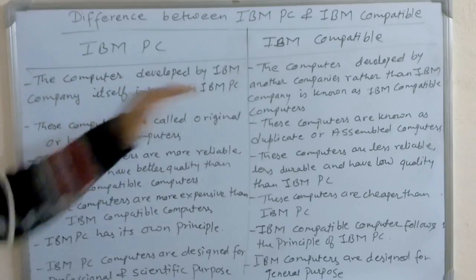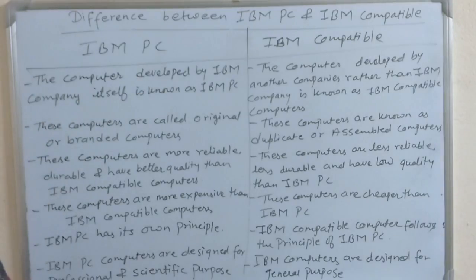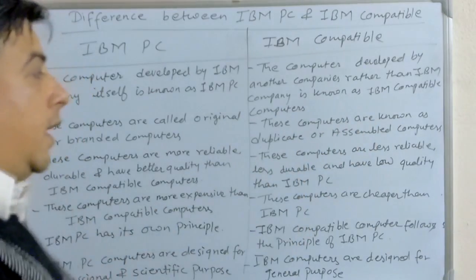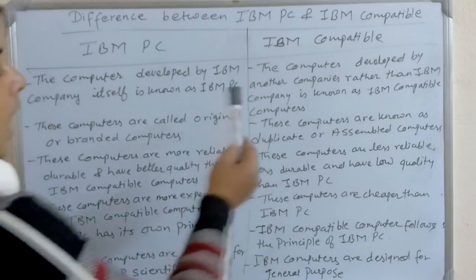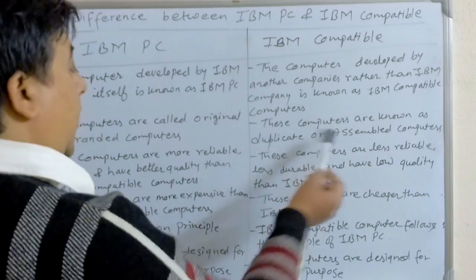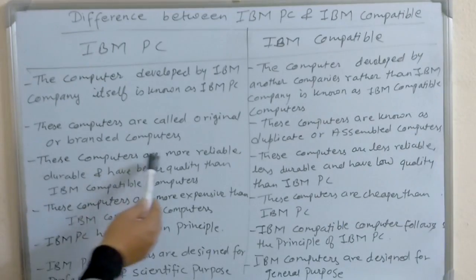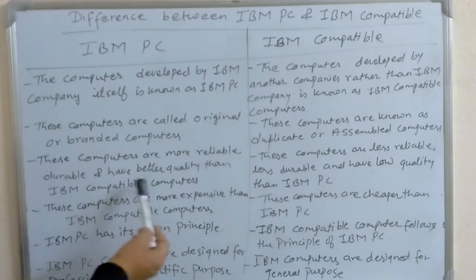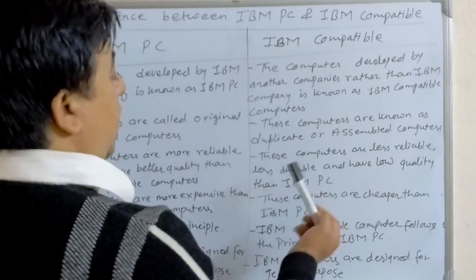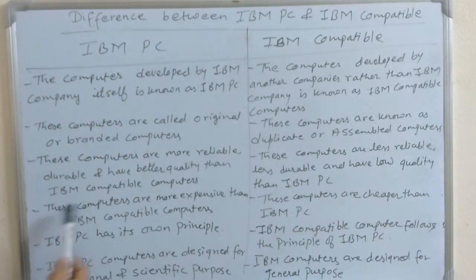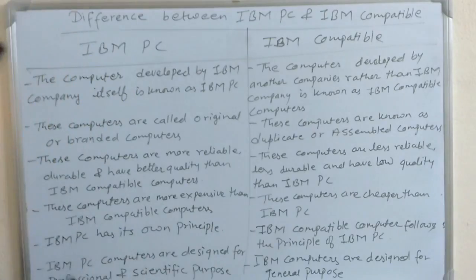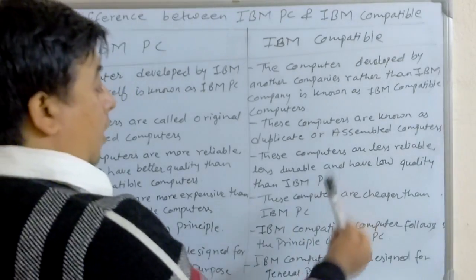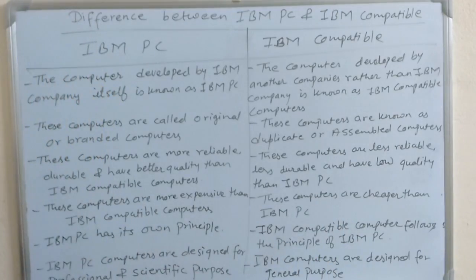To summarize: the computer developed by IBM company itself is known as IBM PC, and the computer developed by other companies is known as IBM compatible computers. IBM PC are original or branded computers; IBM compatible computers are duplicate or assembled computers. IBM PC are more reliable, durable, and have better quality, and are more expensive. IBM PC has its own principle while IBM compatible computers follow IBM's principle. IBM PC computers are designed for professional and scientific purpose.